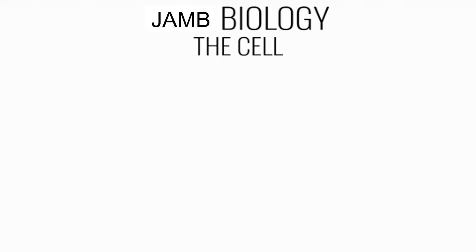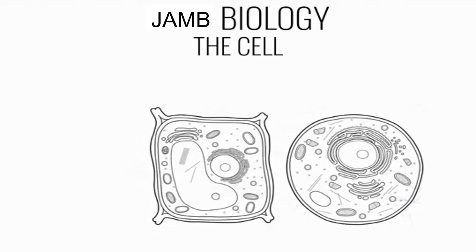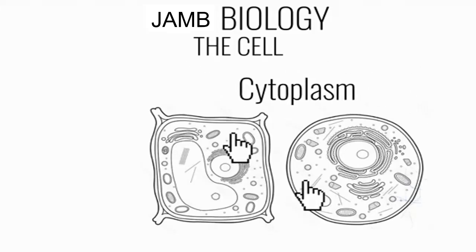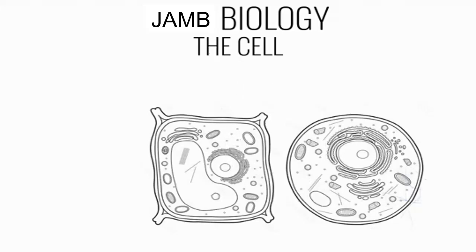We have some organelles found in both plants and animals, and a few others unique to plants alone. Starting with the first one: the nucleus, which contains the genetic material and controls the activities of the cell. The cytoplasm is a gel-like substance where most chemical reactions within the cell happen, and it contains enzymes that control these reactions.